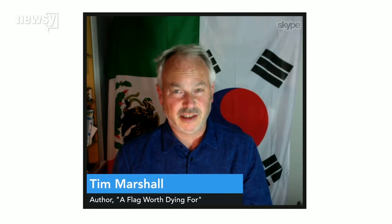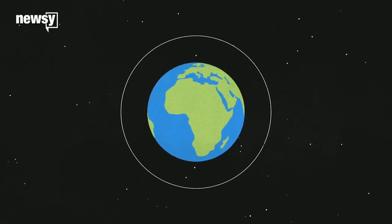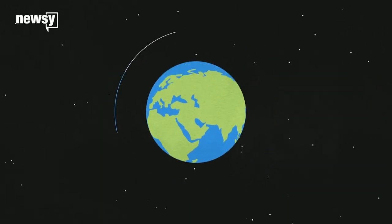The flag is the embodiment of what the country can be — perhaps what the country should be. This is Tim Marshall, a British journalist who literally wrote the book about the role of flags in politics. Your flag, written through it, is your history and your ideals about freedom and independence. A country doesn't always live up to its ideals, but the ideals are embodied in the piece of cloth.